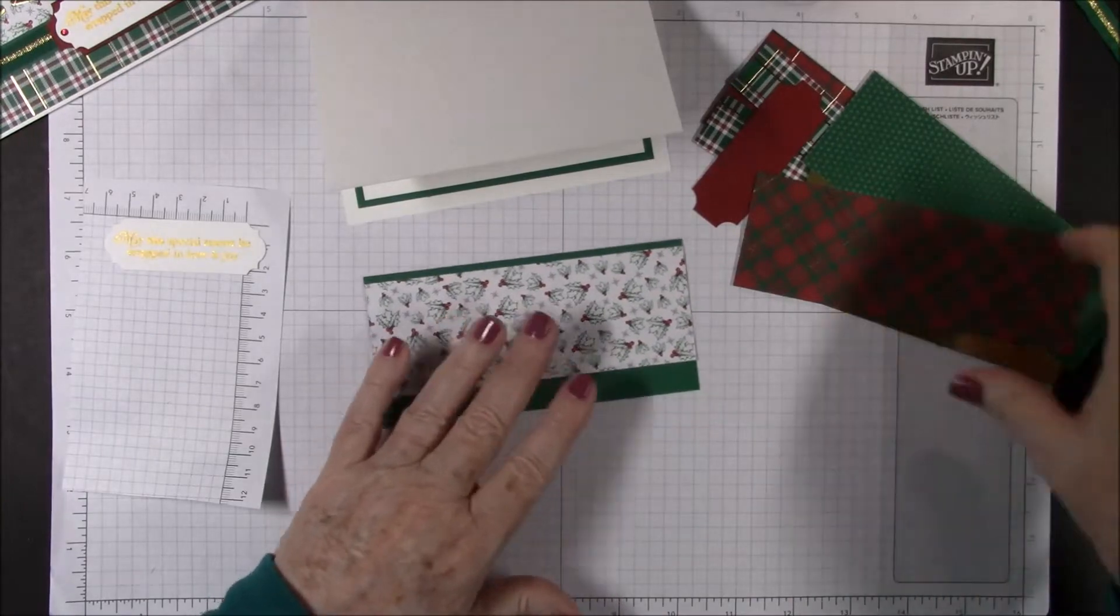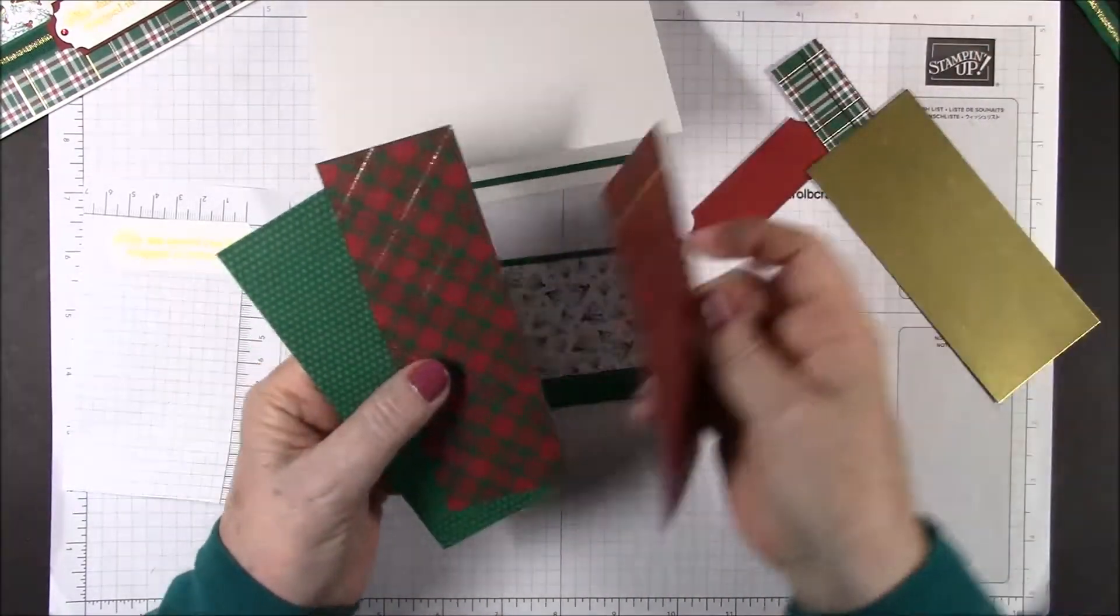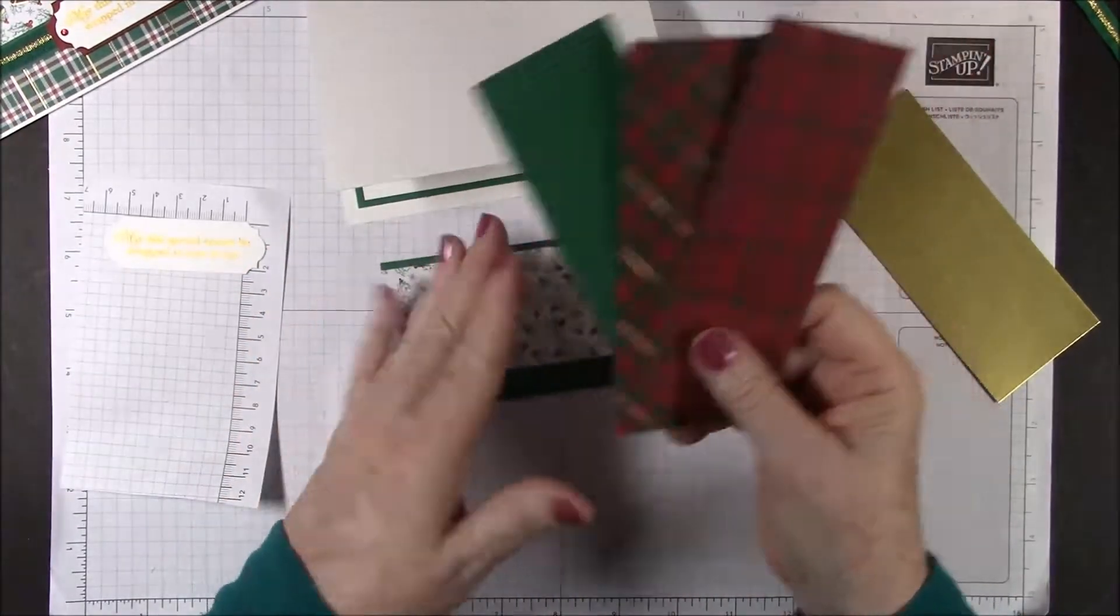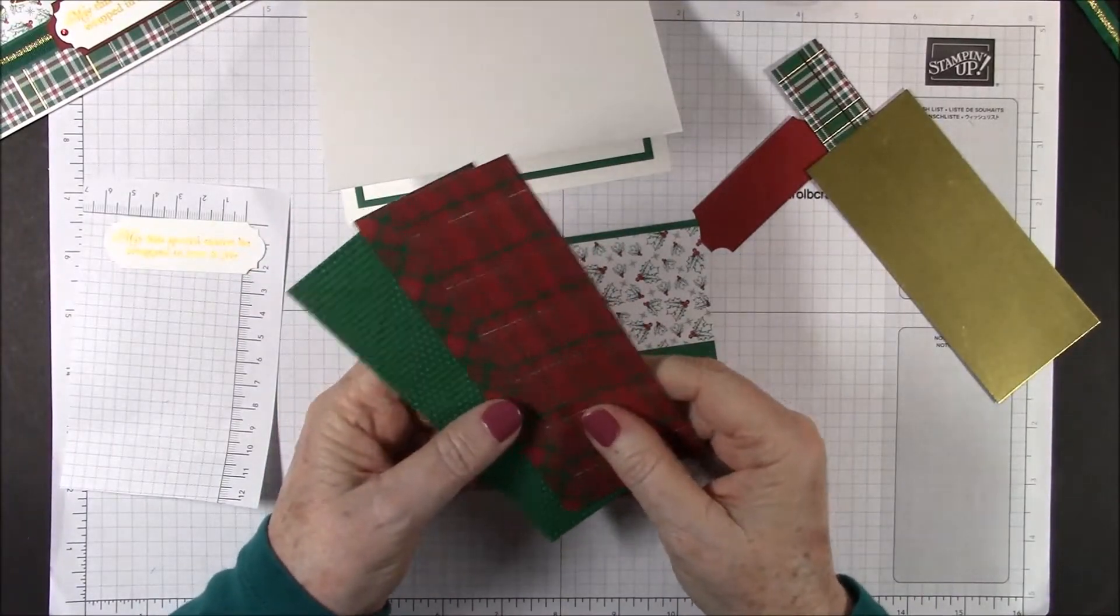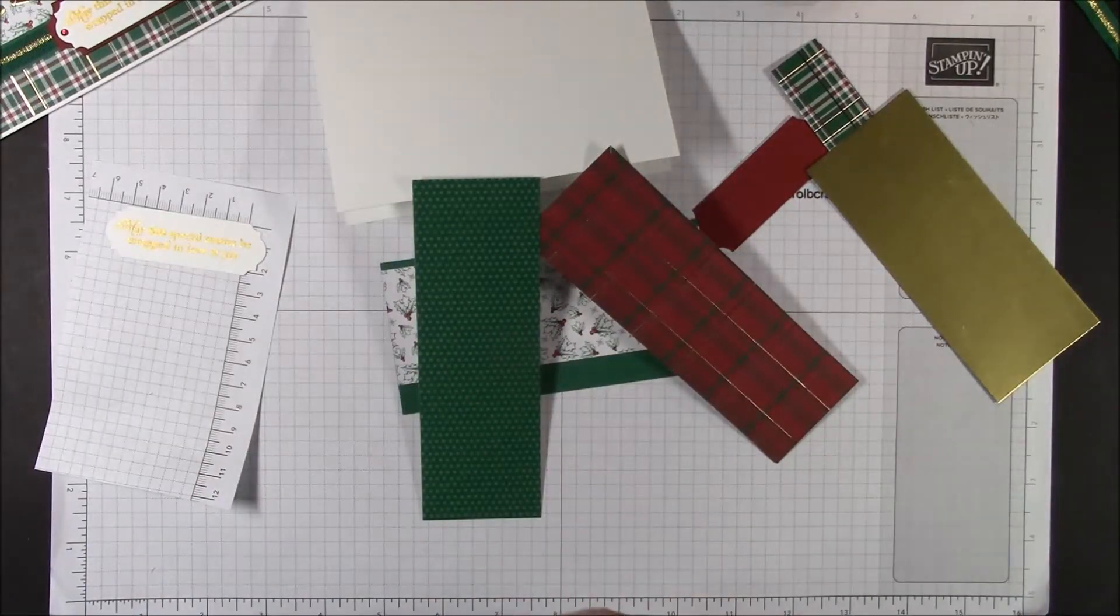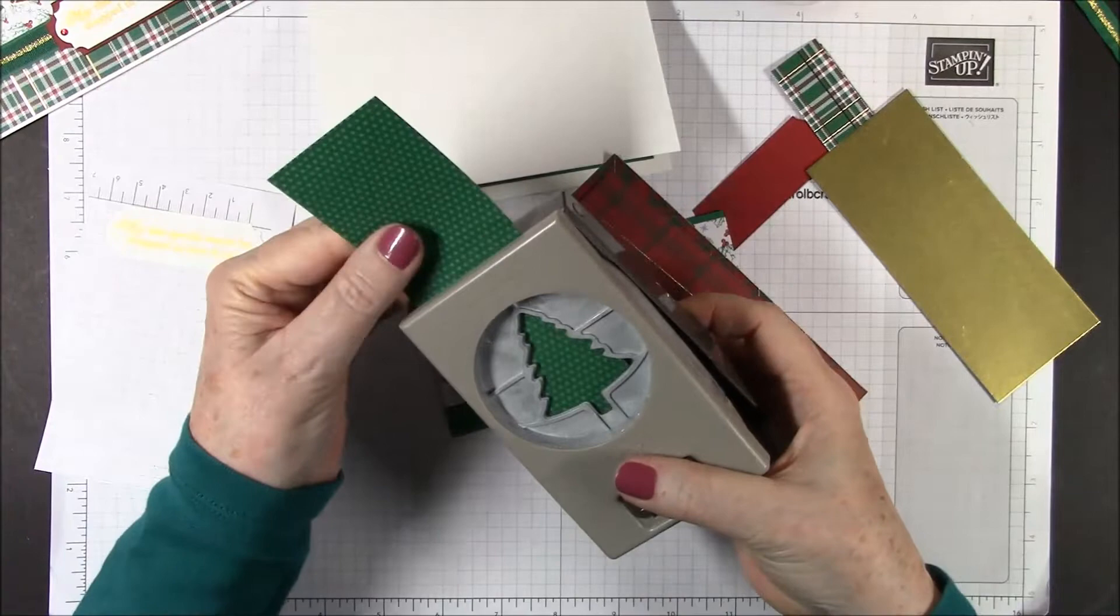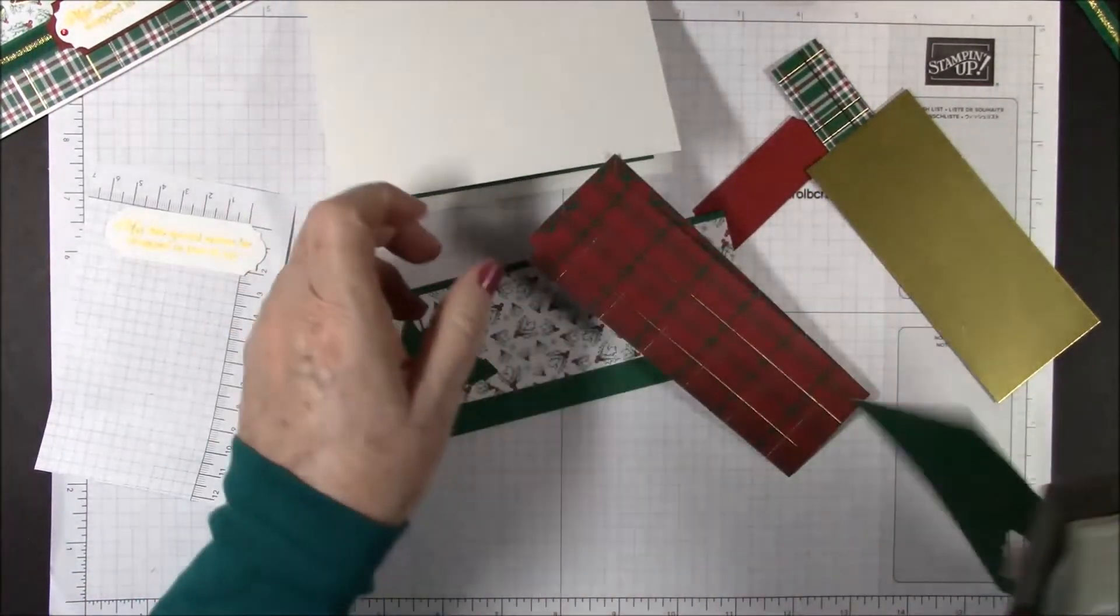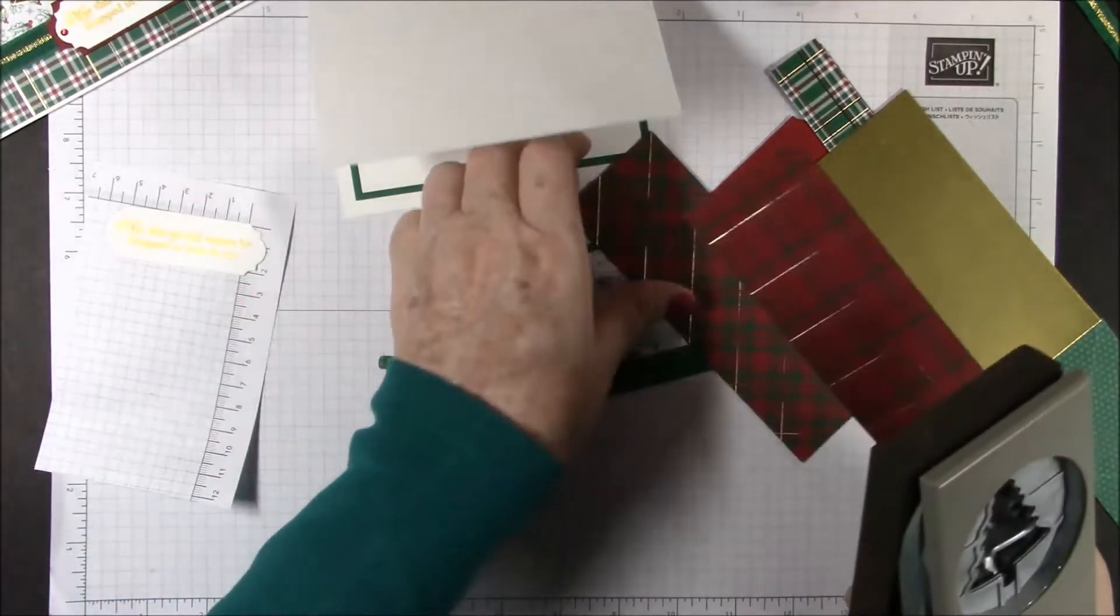Now we want to make our trees. We only need three but we have actually enough to make six, so you might be able to make another one of these cards. We need one of the green with the dots, so I'm just going to punch one out here, and then we need one with the red.